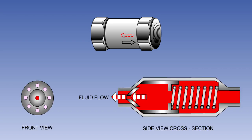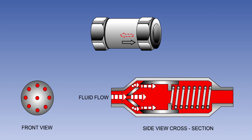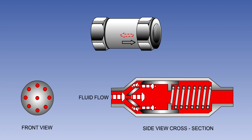When fluid is flowing in the direction of the restriction, the spring, assisted by fluid pressure, will push the valve onto its seat, closing the holes around its circumference, allowing fluid to flow only through the central orifice. When flowing in the opposite direction, fluid pressure will push the valve off its seat, allowing the fluid to flow through all holes.